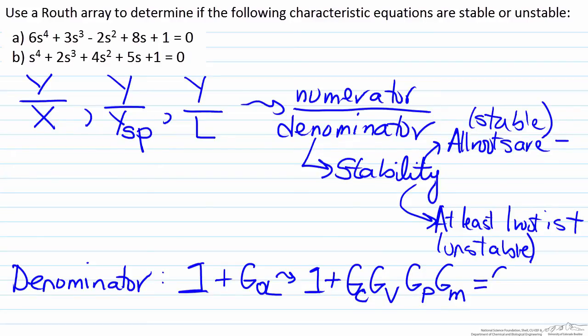When we set this equal to zero, this represents the characteristic equation. All we need to analyze the stability of a process is its characteristic equation, in other words one plus the open loop gain.